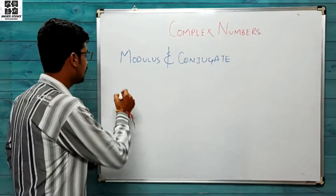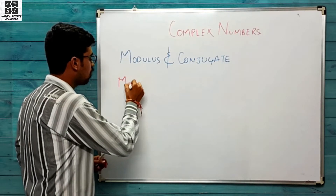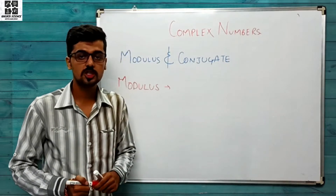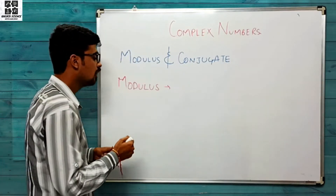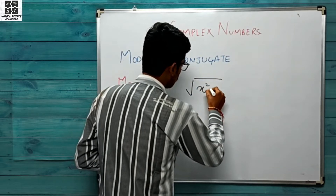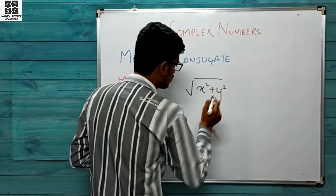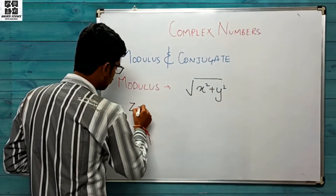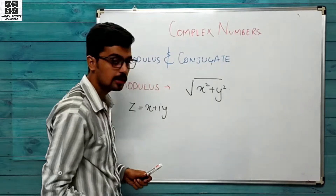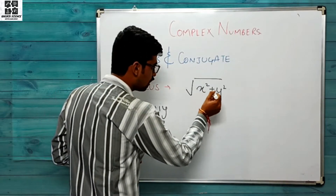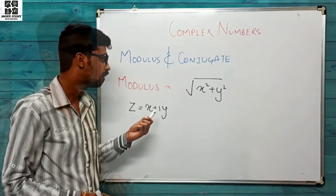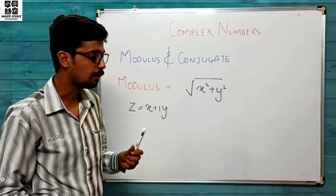Modulus is nothing but a non-negative real number whose value is equal to √(x² + y²). If we have a complex number z = x + iy, then the under root of x² + y² whole square will be the modulus of this complex number.